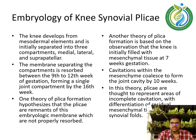Regarding the embryology of knee synovial plicae: the knee develops from mesodermal elements and is initially separated into three compartments — medial, lateral, and suprapatellar. The membrane separating the compartments is resolved between the 9th to 12th week of gestation, forming a single joint compartment by the 16th week. One theory hypothesizes that the plicae are remnants of this embryologic membrane which are not properly resolved.